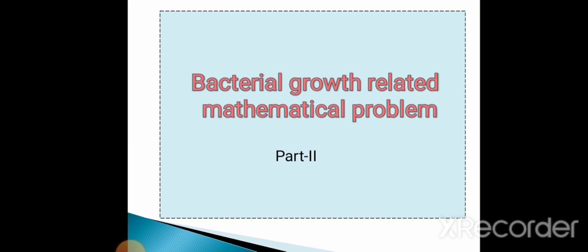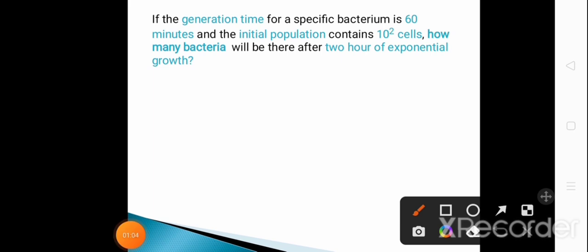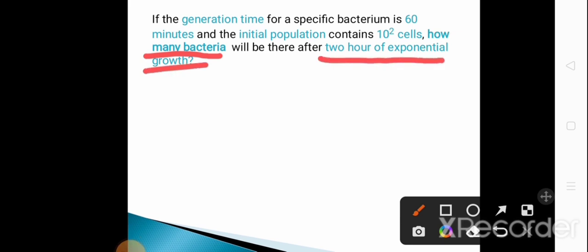The first question: if the generation time for a specific bacterium is 60 minutes and the initial population contains 10² cells, how many bacteria will there be after two hours of exponential growth? We have to calculate the final number of bacteria after two hours of exponential growth. The initial population is 10² cells and the generation time is 60 minutes.